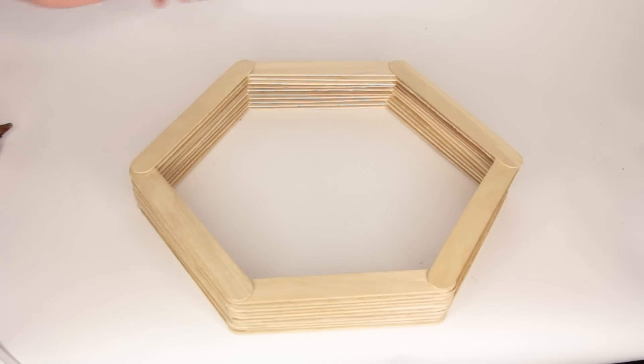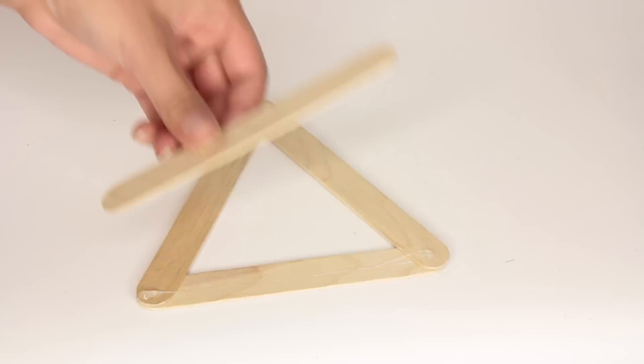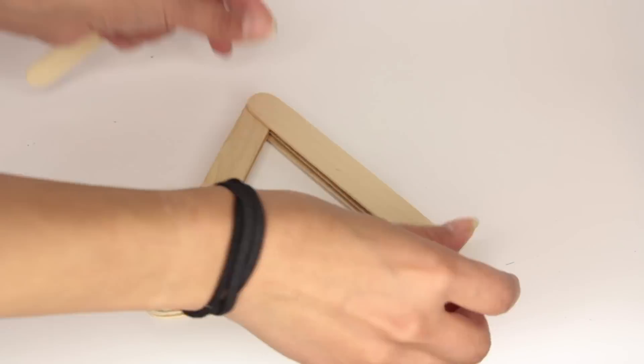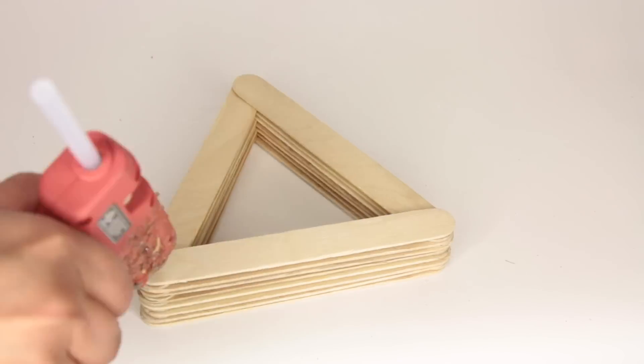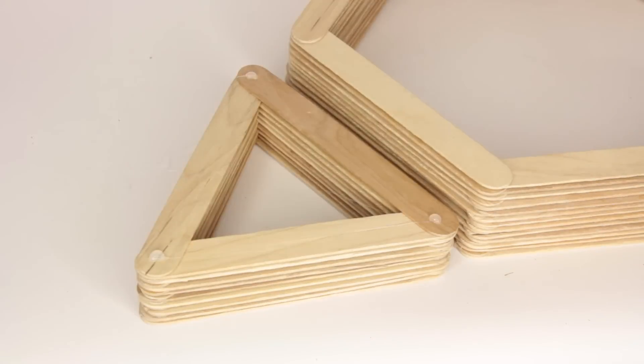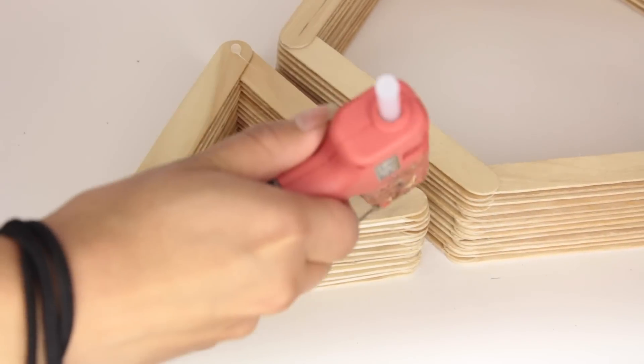You essentially make your triangle shelves the same way. You glue the popsicle sticks one on top of the other in the shape of a triangle, of course. You'll be able to make two triangles with one pack of the jumbo kraft sticks. Place the triangles beside the hexagon shape to make sure they're the same width as the hexagon.